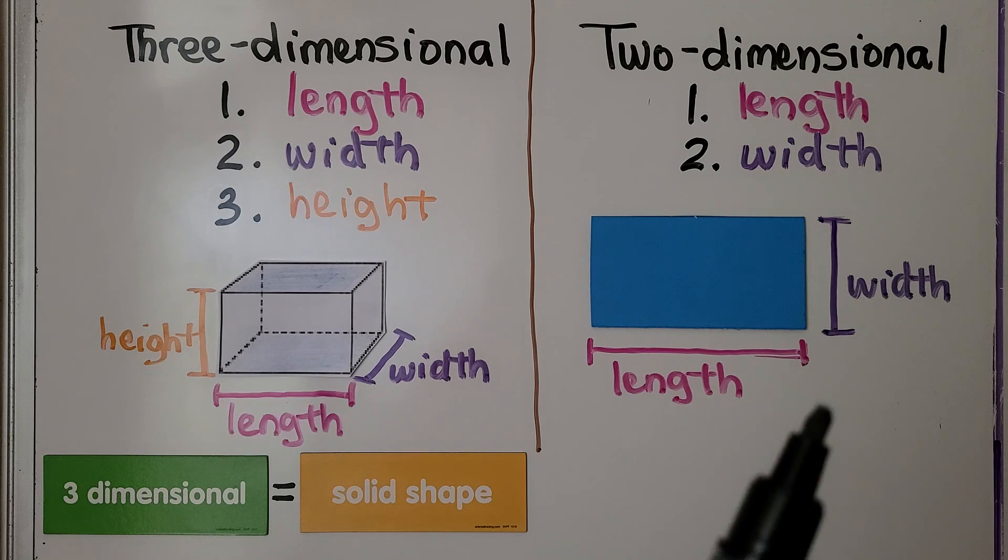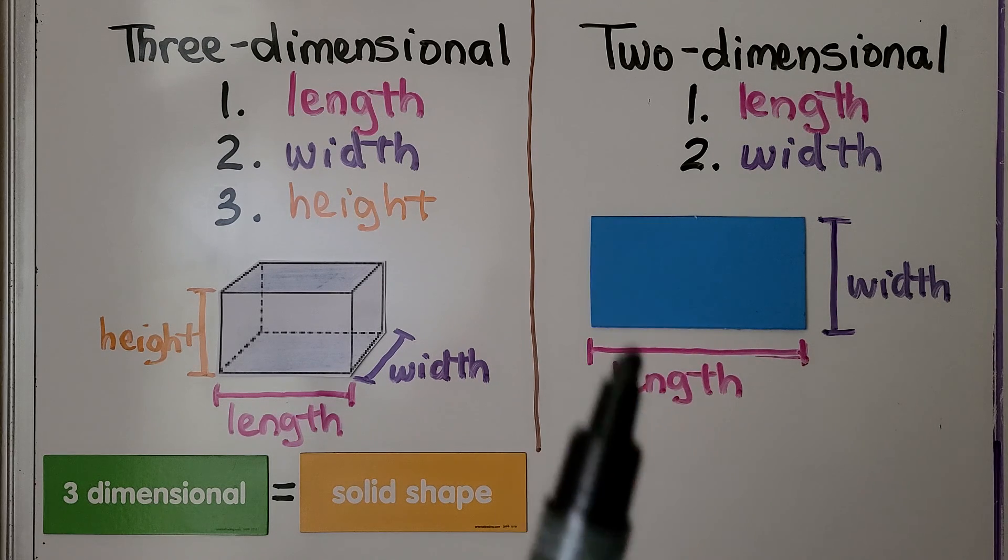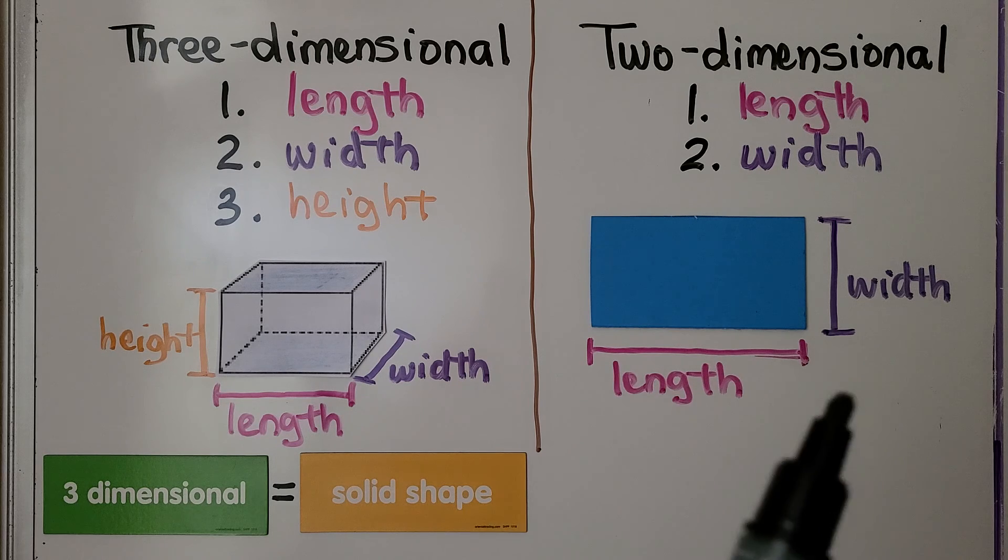A two-dimensional shape has just two dimensions, length and width. It's a flat surface. It has length and width.